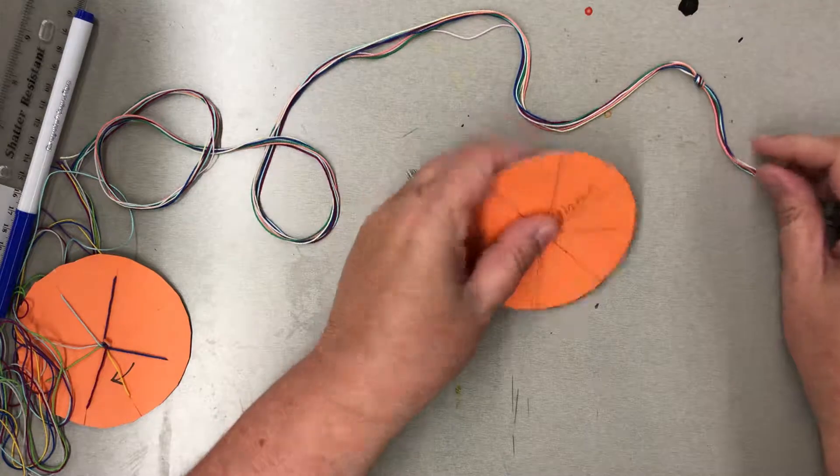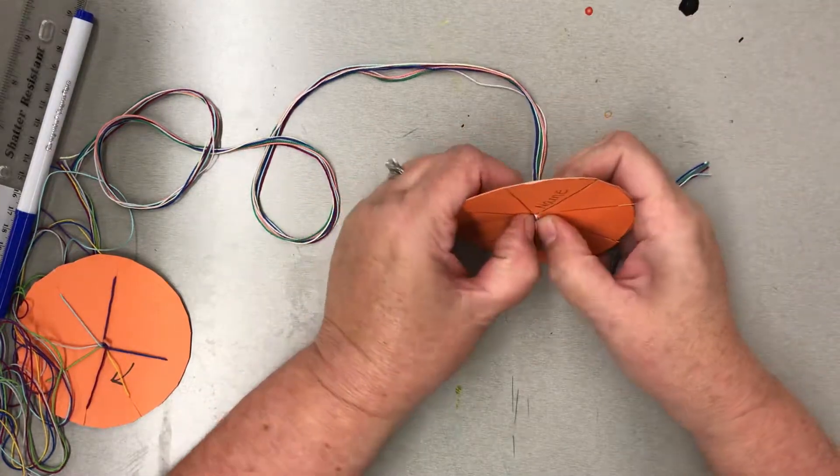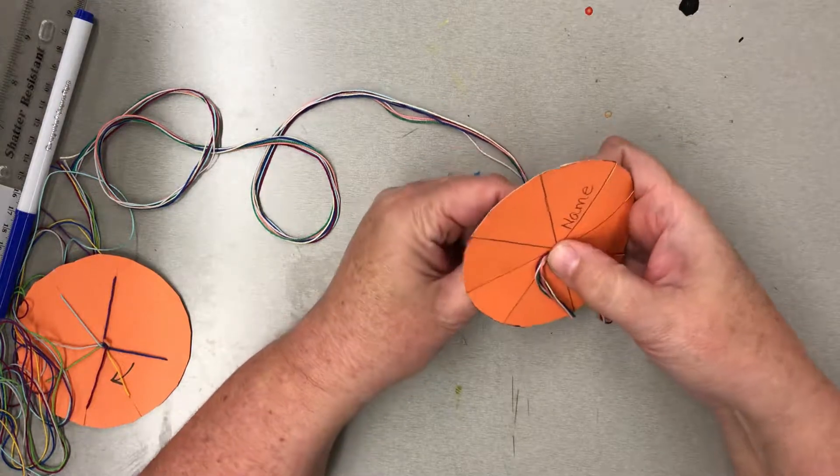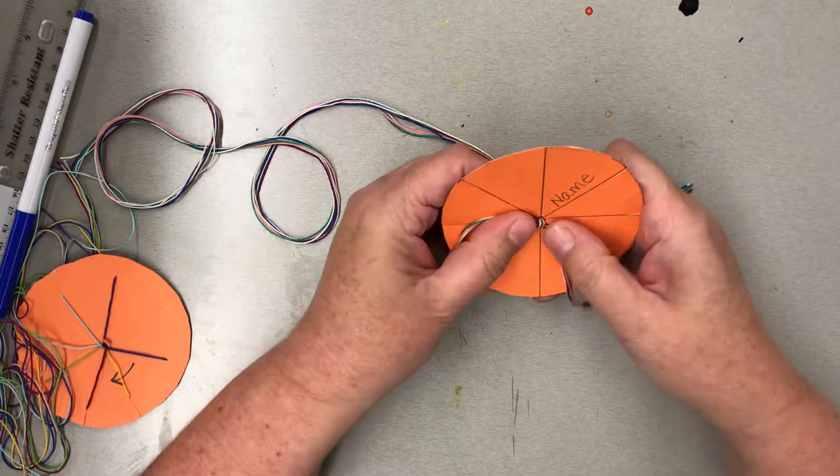The next thing you want to do is stick the knot through the hole in the middle of the loom. You may need to use the pencil to help shove it through.